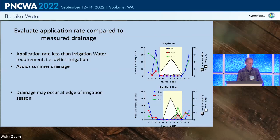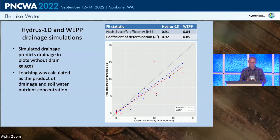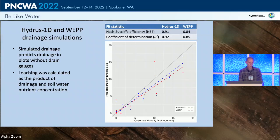We'd like to expand measurements from 15 drain gauge plots out to all 50 plots to determine leaching, since we have nutrient and soil water measurements from all 50. We used two hydrologic models: Hydrus, a detailed process model, and WEPP (Water Erosion Prediction Project), a watershed model.